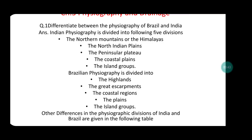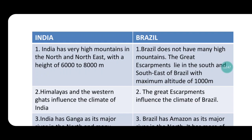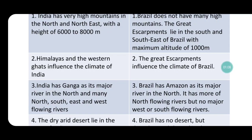Besides this, the other differences are tabulated in table form. India has very high mountains in the North and Northeast with a height of 6000 to 8000 meters. Brazil does not have any such high mountains — the Great Escapements lie in the South and Southeast but maximum altitude is just 1000 meters. The Himalayas and the Western Ghats influence the climate of India, while the Great Escapements influence the climate of Brazil.